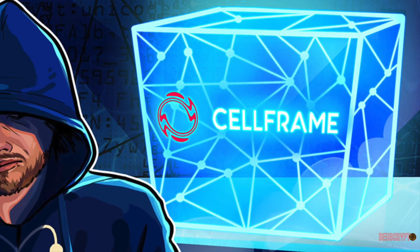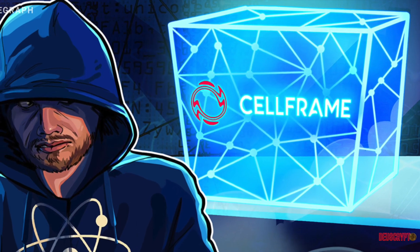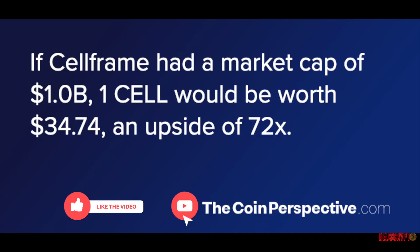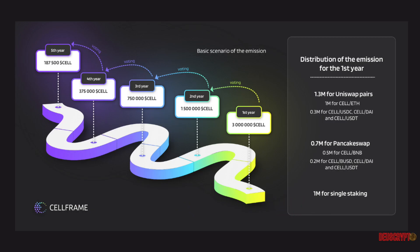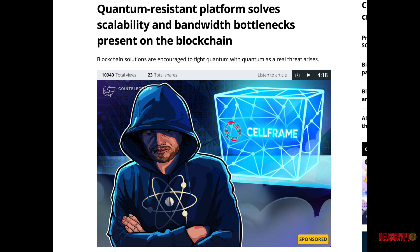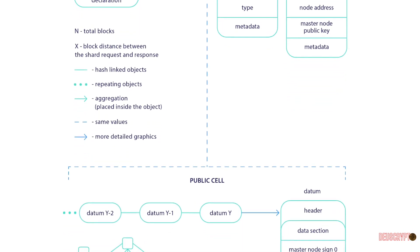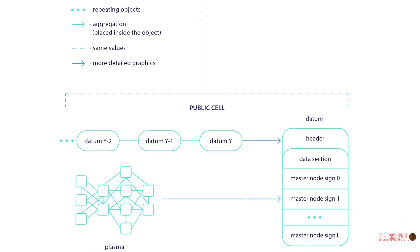My hot take on CELLFRAME is that I'm very bullish and excited about the project. It is a quantum-resistant Layer 1, and you're able to get in at the ground floor. It's not on major exchanges right now — not yet on KuCoin, Binance, or Coinbase. You can pick it up on Uniswap, for example. I think there's a lot of potential, finding these kinds of projects that have niches and moats, and I'm bullish on Layer 1s.